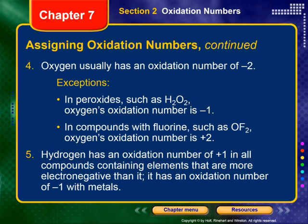Number five: hydrogen has an oxidation number of plus one in all compounds containing elements that are more electronegative than it. It has an oxidation number of minus one when it is with a metal. If hydrogen is with a nonmetal, it's going to be less electronegative than the element it's bonded to, so its one electron moves away from it — giving it a plus one oxidation number. But if hydrogen is bonded to a metal, it will draw an electron toward it and have an oxidation number of minus one.